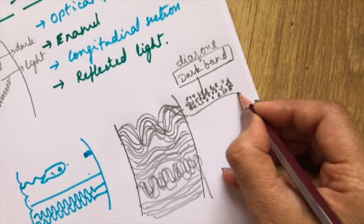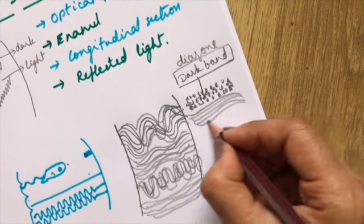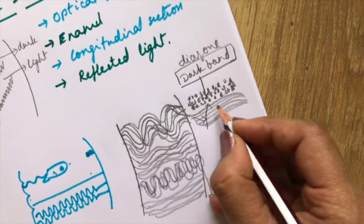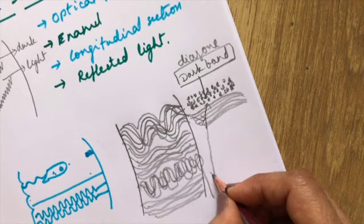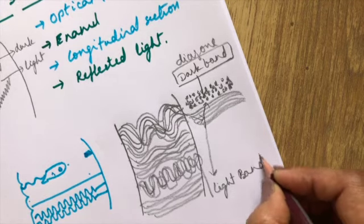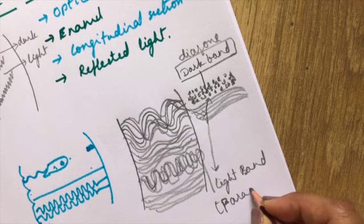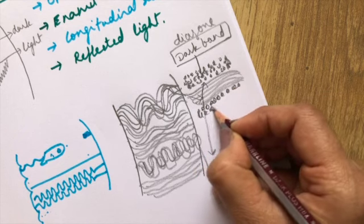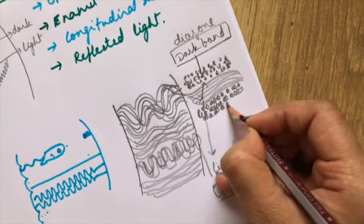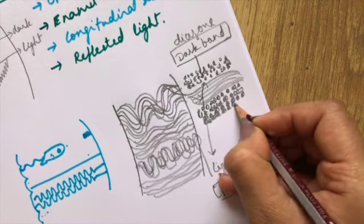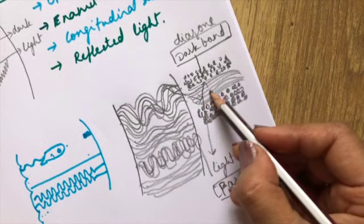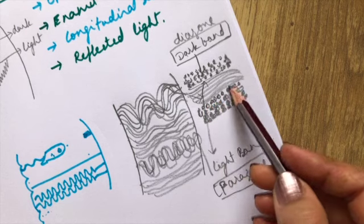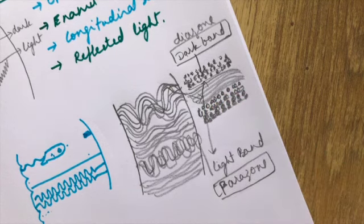The portion where rods are longitudinally cut will reflect the light back, so the observer will be able to see the light. We have alternating bands of diazones and parazones, caused by the difference in orientation of the wavy rods. When we cut, some rods are transversely cut and some are longitudinally cut. The transversely cut ones appear dark — called diazones — because they absorb the light. The longitudinally cut rods reflect the light and appear as light bands, called parazones.